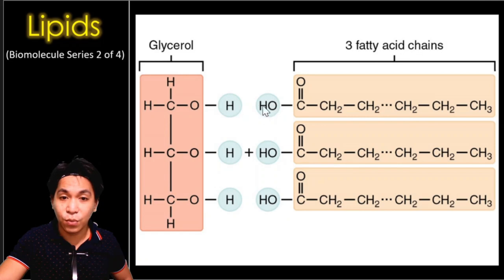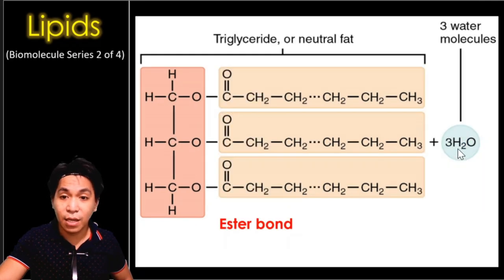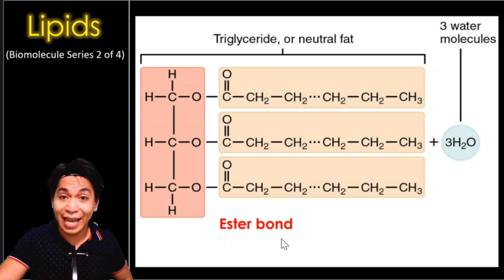If we remove the OH and the H atom, the carbon will need one more bond, as will the oxygen. This is repeated three times, forming what we call the ester bond. So we have an ester bond, an ester bond, and an ester bond — three ester bonds in total in the formation of a triglyceride.